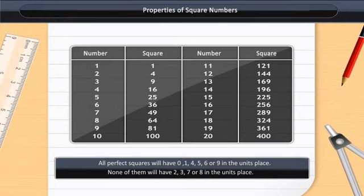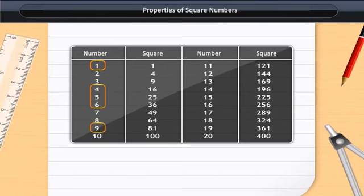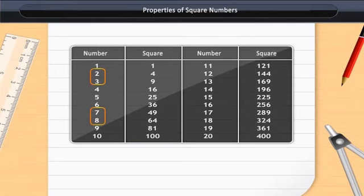You can observe this for yourself. In this table, we can see that square numbers will have the digits 0, 1, 4, 5, 6, and 9 in the units place. Hence, we can say that numbers ending with these digits can be perfect squares, whereas numbers having the digits 2, 3, 7, or 8 in the units place can never be perfect squares.